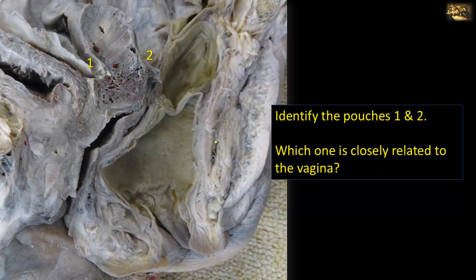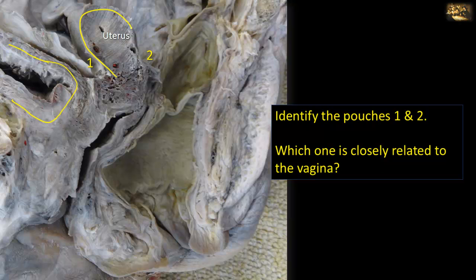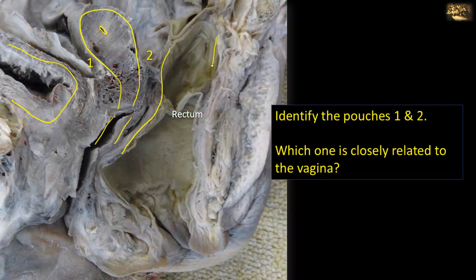Identify pouches 1 and 2. This is a sagittal section of a female pelvis to be oriented. This is the urinary bladder — the base, neck of the bladder, and the direction toward the apex. This is the uterus; you can see some of the cavity of the body of the uterus. This is the part of the cervix leading to the vagina, here is the vagina, and that will be the rectum — here is the ampulla of the rectum posteriorly.